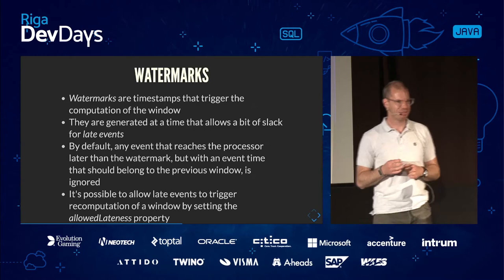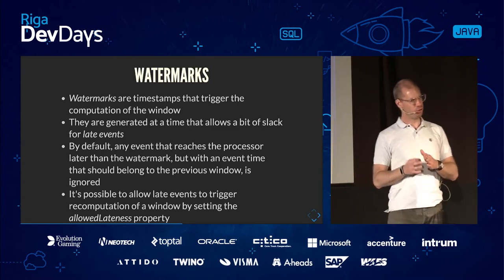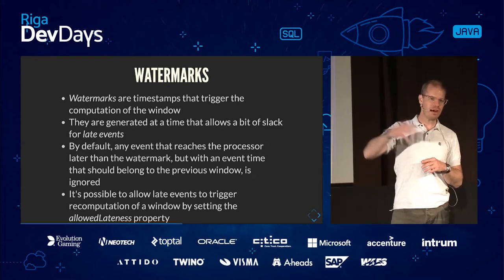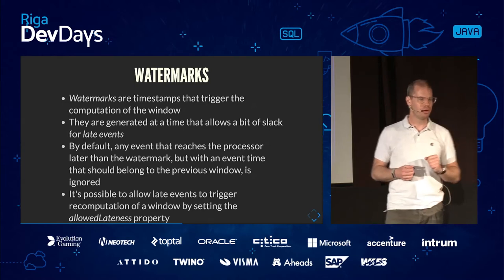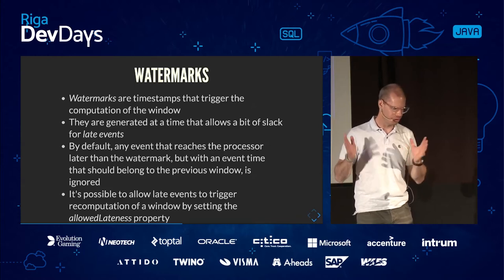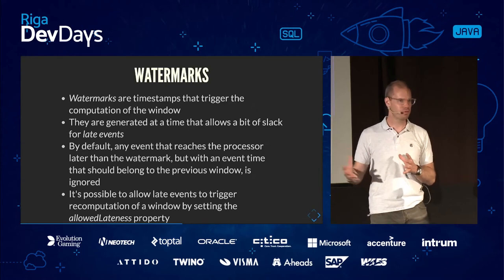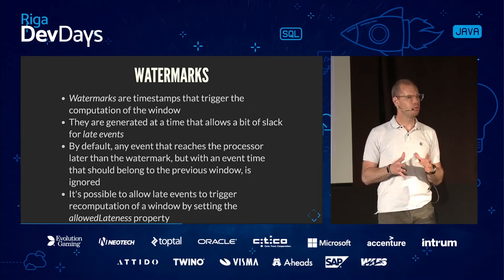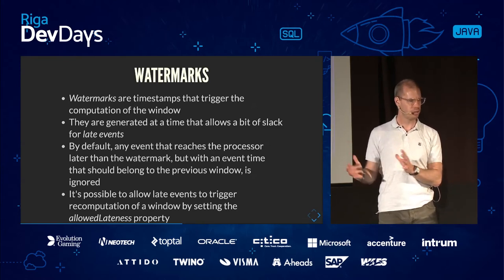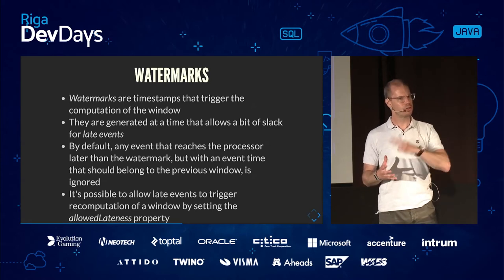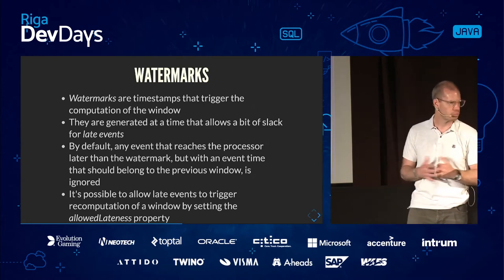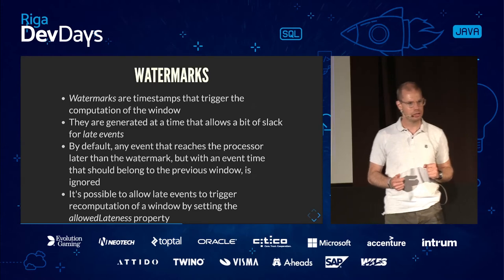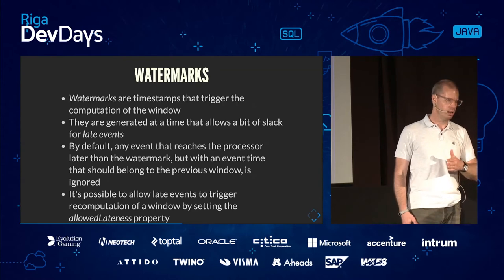One more thing: even after your watermark has passed and you've done your window calculation, it's still possible that an event arrives very late — beyond your watermark — because maybe it was stuck on the network or the source system had an issue. Flink allows you to say: even that doesn't matter — we still allow a recalculation of the window that has already passed, including the late event. That's called the allowed lateness property — you set it to, for example, another second, enabling recomputation even after the watermark.